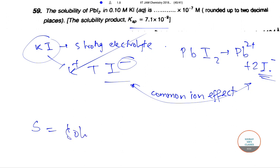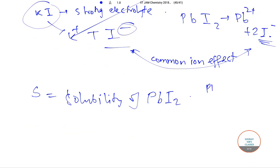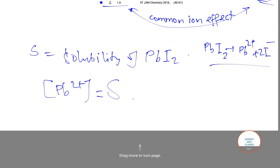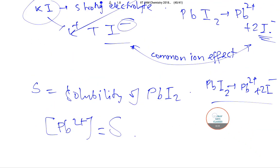We will take the solubility of PbI2 as S. Since PbI2 dissociates as Pb2+ + 2I-, the concentration of Pb2+ equals S, and that of I- will be equal to 2S because the equation has 2I-.